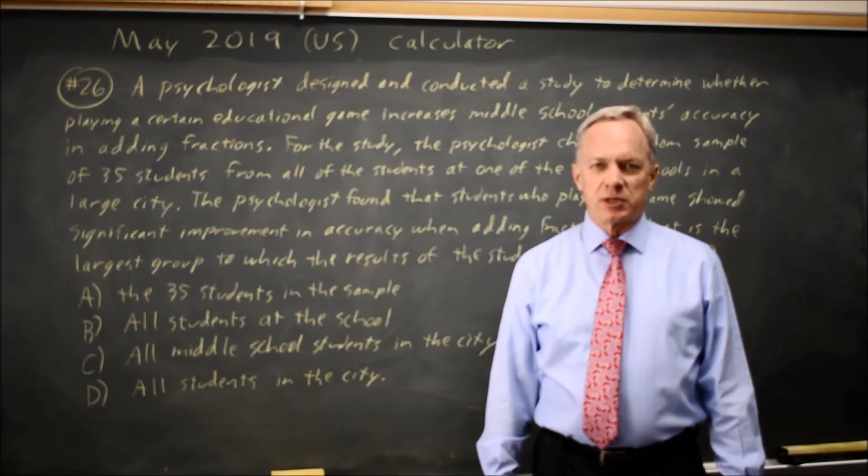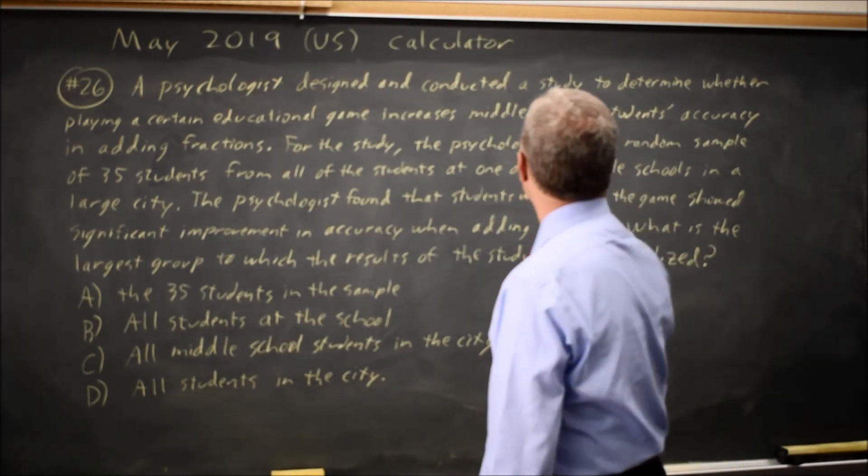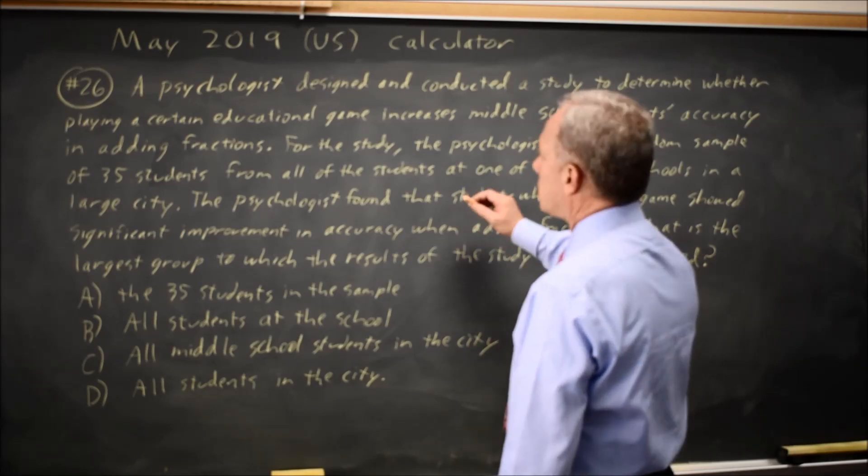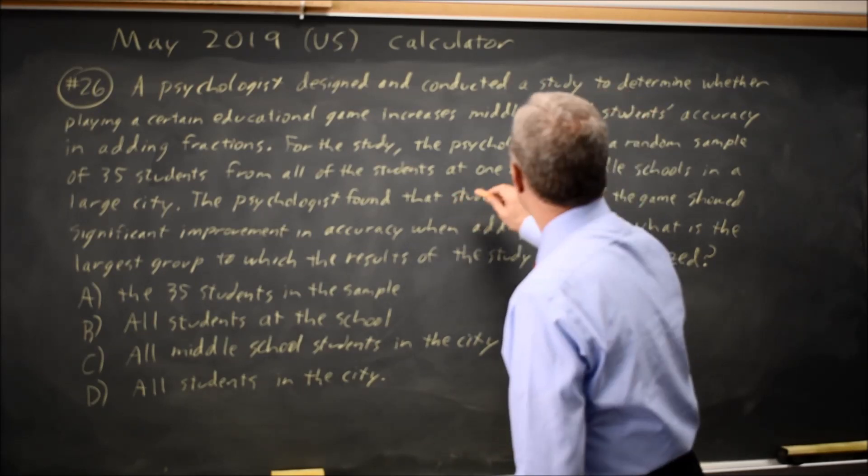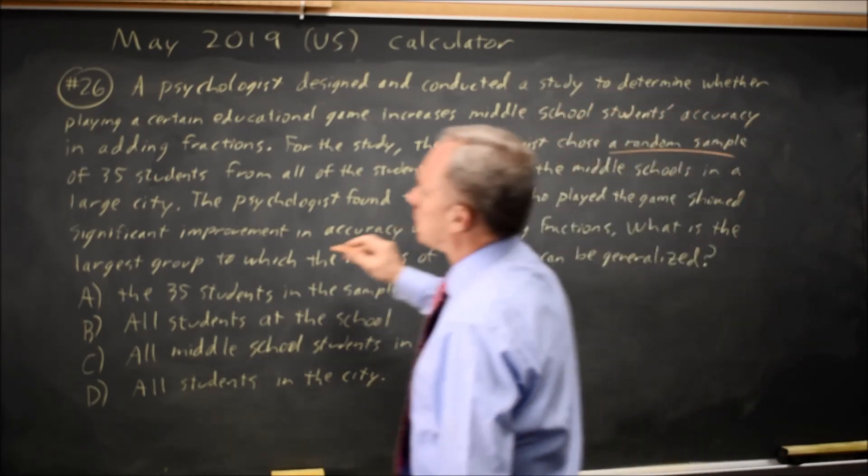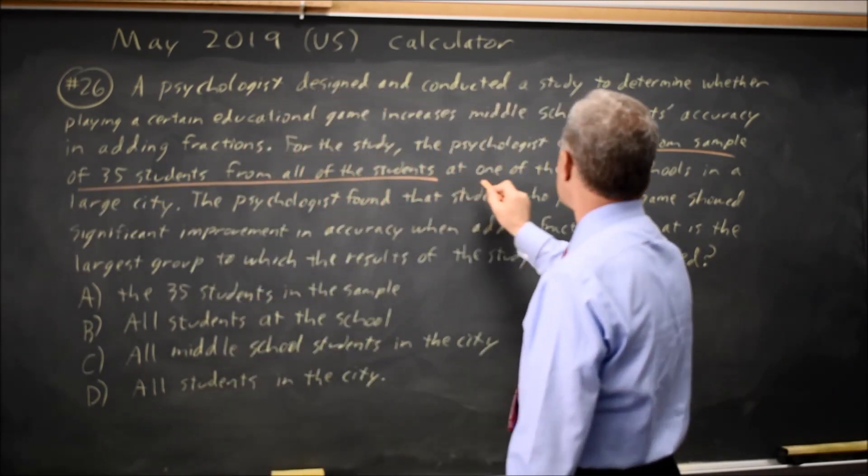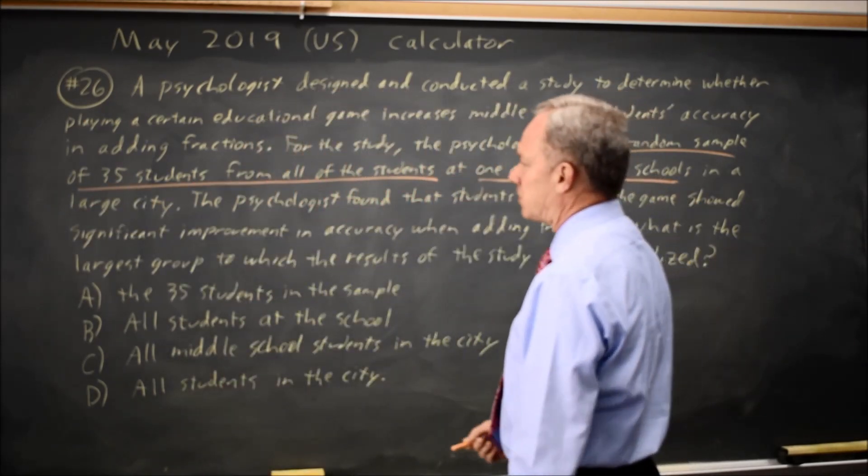This is calculator question number 26. College Board asked about a study involving a random sample of 35 students from all the students at one of the middle schools in a large city.